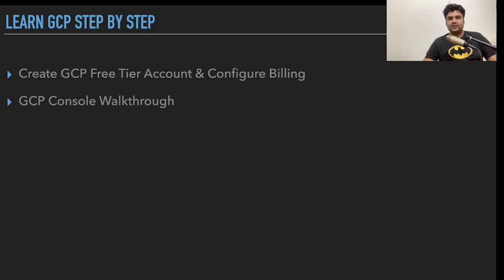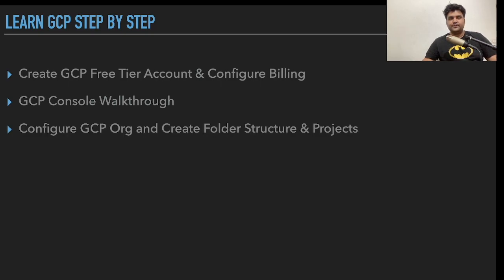Hi guys, welcome to Cloud Sprint. In the last two videos we covered how to create a GCP free tier account and configure billing. The second video was a console walkthrough where we learned how to use various GCP services. Today we are going to cover how to configure a GCP organization, create folder structure, and projects as per our needs.